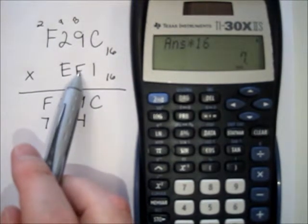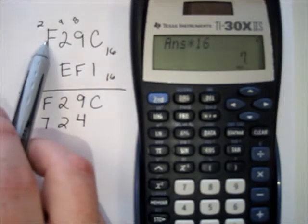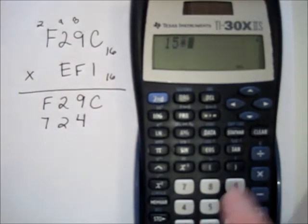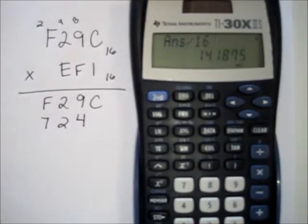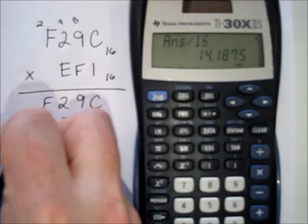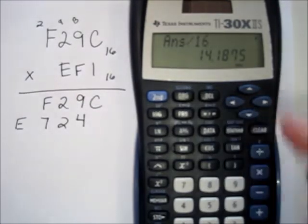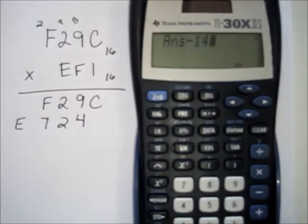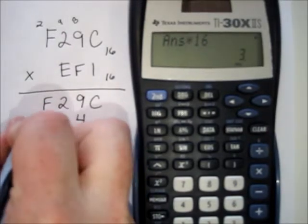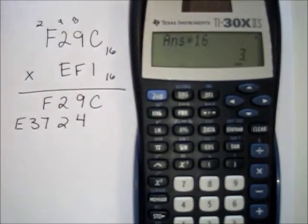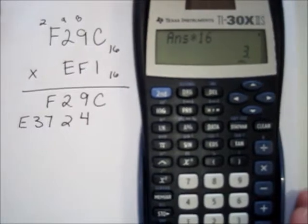Lastly, 15 times 15 plus 2 carried is 227. Divide by 16 to get 14-point-something — 14 is the letter E. Subtract the 14 and multiply by 16 to get remainder 3. So that row reads E-three-seven-two-four in base sixteen.